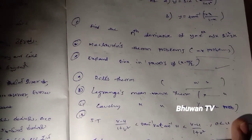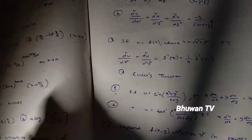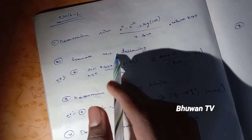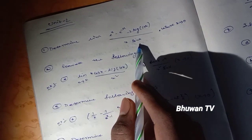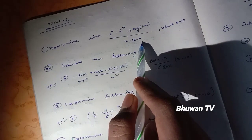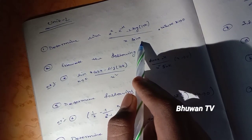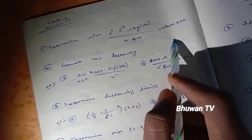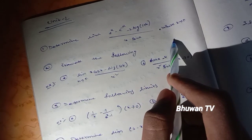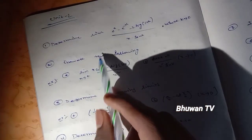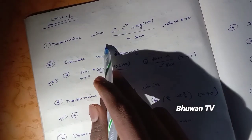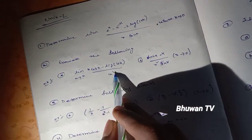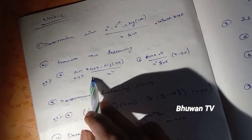Second unit — calculus limits. Determine the limit of (e^x minus e^(−x) minus 2 log(1 plus x)) / (x sin x) as x tends to 0.